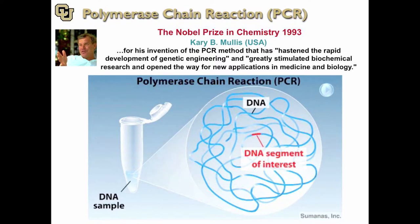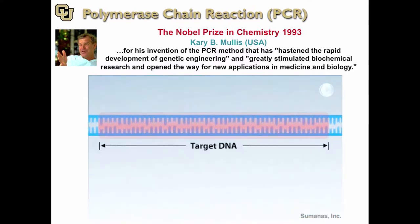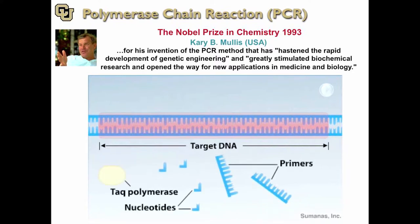This is the starting material for the polymerase chain reaction, or PCR. With PCR, an investigator can amplify a single copy of a DNA segment into billions of identical copies. The DNA segment of interest, or target DNA, is indicated in red. A PCR reaction contains several other ingredients: free nucleotides, DNA primers, and the enzyme Taq polymerase. The primers are typically about 20 nucleotides long and are complementary in sequence to the ends of the target DNA. Taq polymerase is derived from hot springs bacteria and can tolerate the intense heat of a PCR reaction.